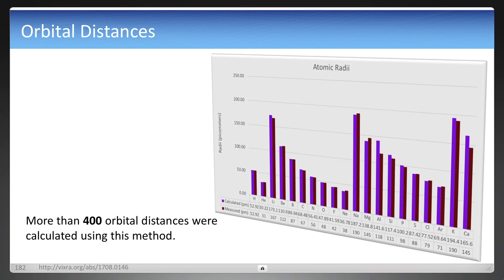And it was done for more than 400 orbital distances, and you can see 20 here as an example, from hydrogen to calcium for neutral atoms. And more information is in the URL for the paper below.